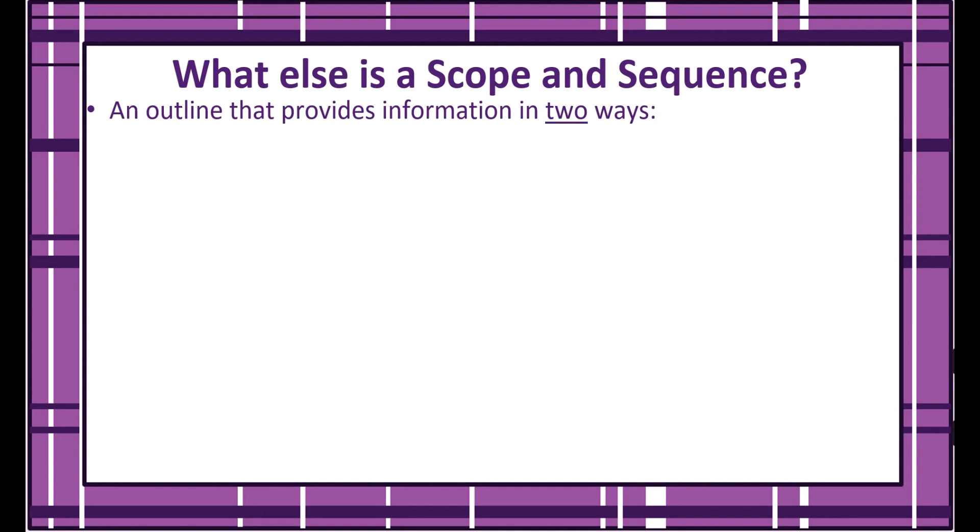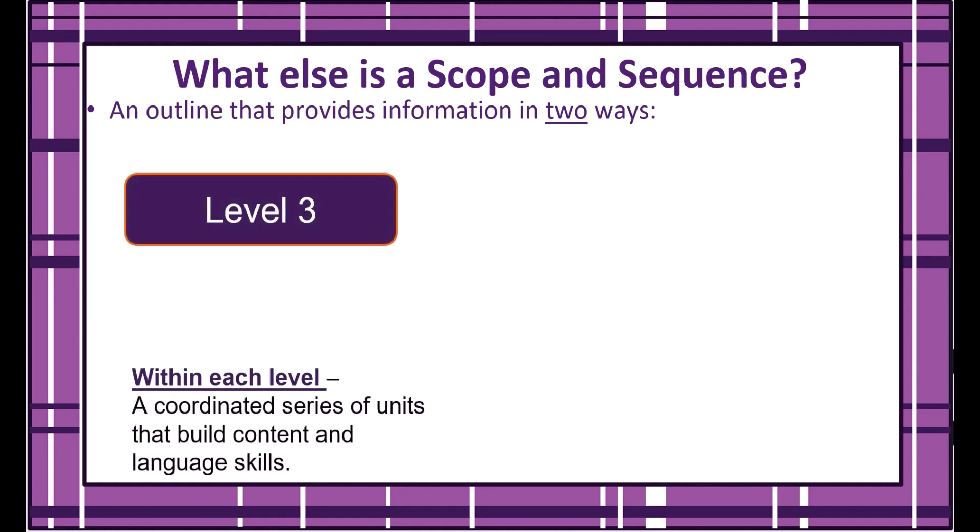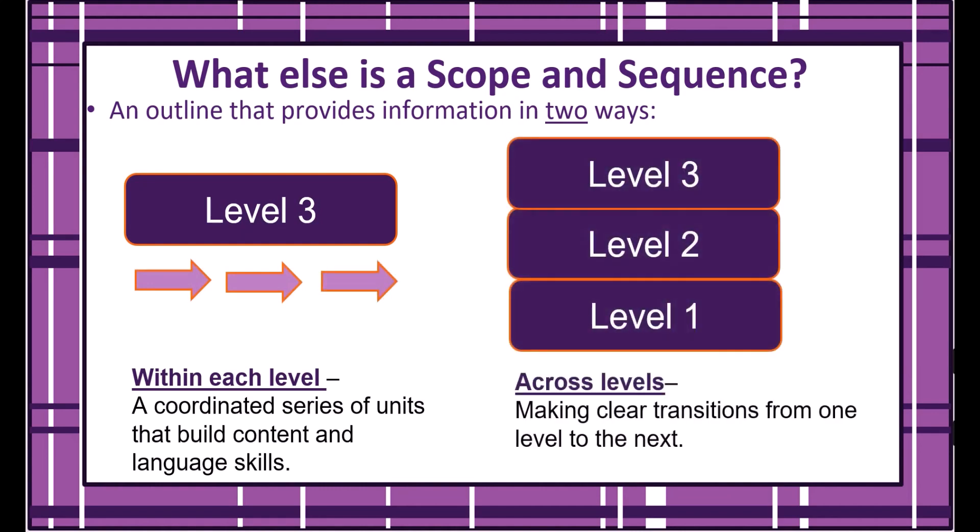A scope and sequence provides information in two directions: horizontally and vertically. Horizontally by level, it shows the progression of content knowledge and language skills as learners move through that level. And vertically, it shows the progression and transition from one level to the next.